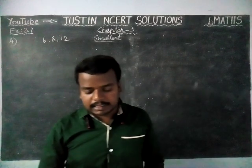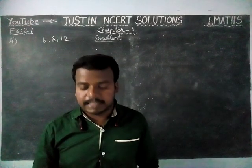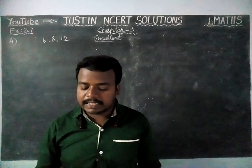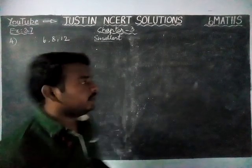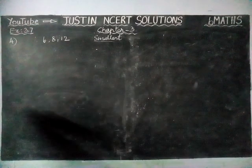The question is: determine the smallest three-digit number which is exactly divisible by 6, 8, and 12.